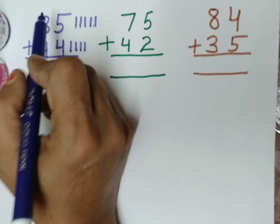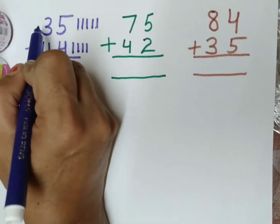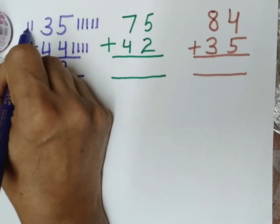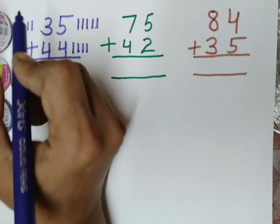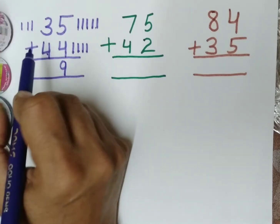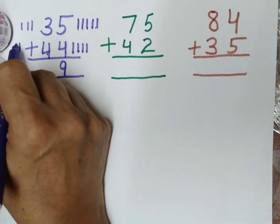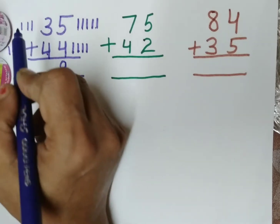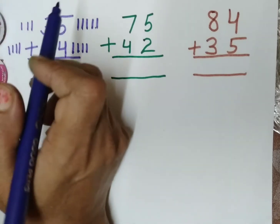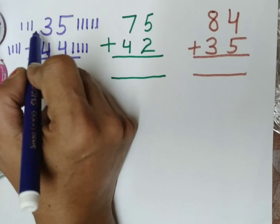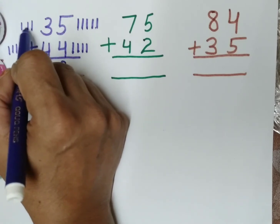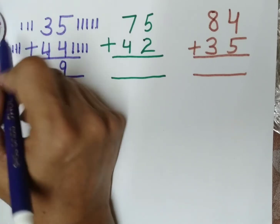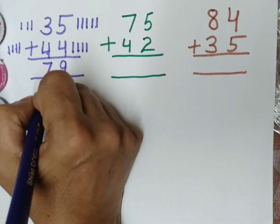Now we will put 10s place. What is this? This is 3: 1, 2, 3. And what is this? This is 4: 1, 2, 3, 4. Now we will count all these lines together: 1, 2, 3, 4, 5, 6, 7. The answer is 7.